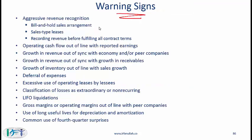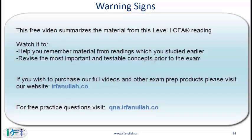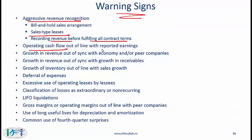These warning signs are taken from the curriculum. With aggressive revenue recognition, watch for: bill-and-hold arrangements where a company bills the customer but holds the inventory; sales-type leases used to show higher revenue; and recording revenue before fulfilling contract terms — ideally revenue should only be booked after terms are met, otherwise it should be unearned revenue. Also watch for operating cash flow that is significantly out of line with reported earnings over several years — for example, if reported earnings are rising but operating cash flows remain flat, that is a red flag.